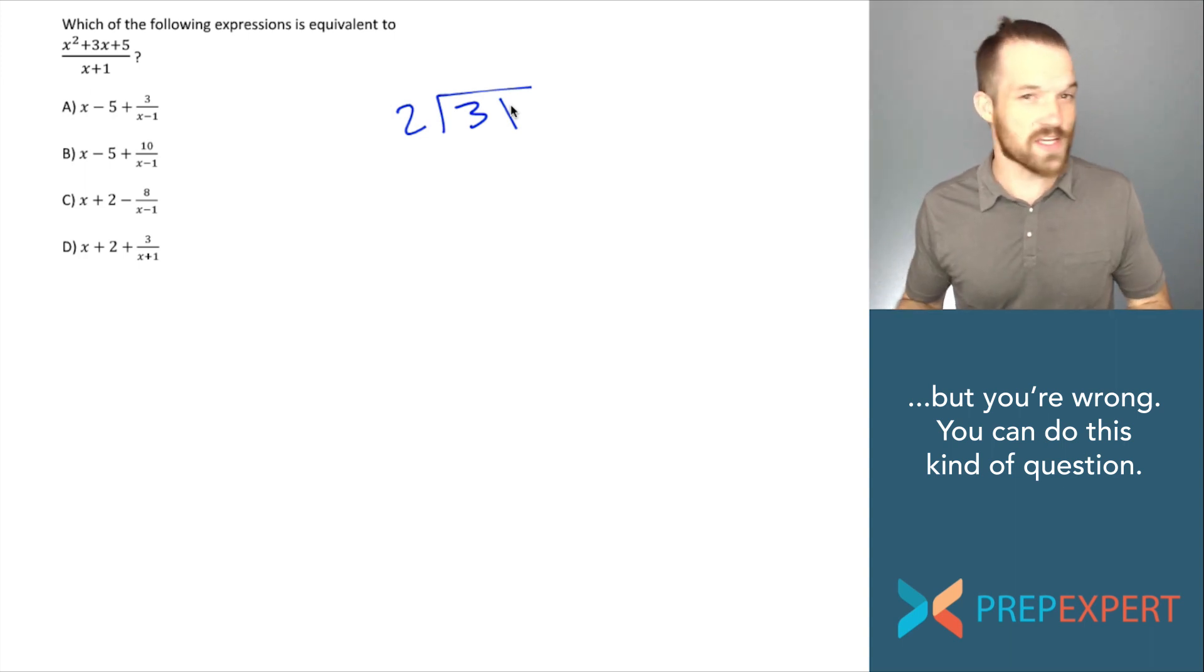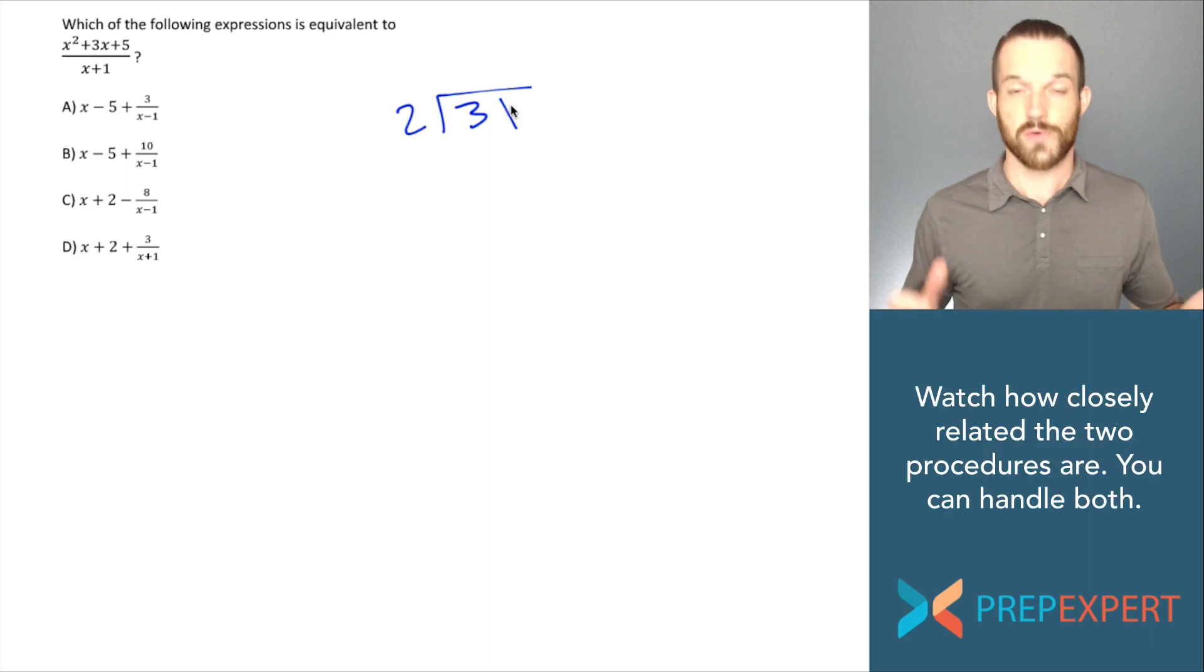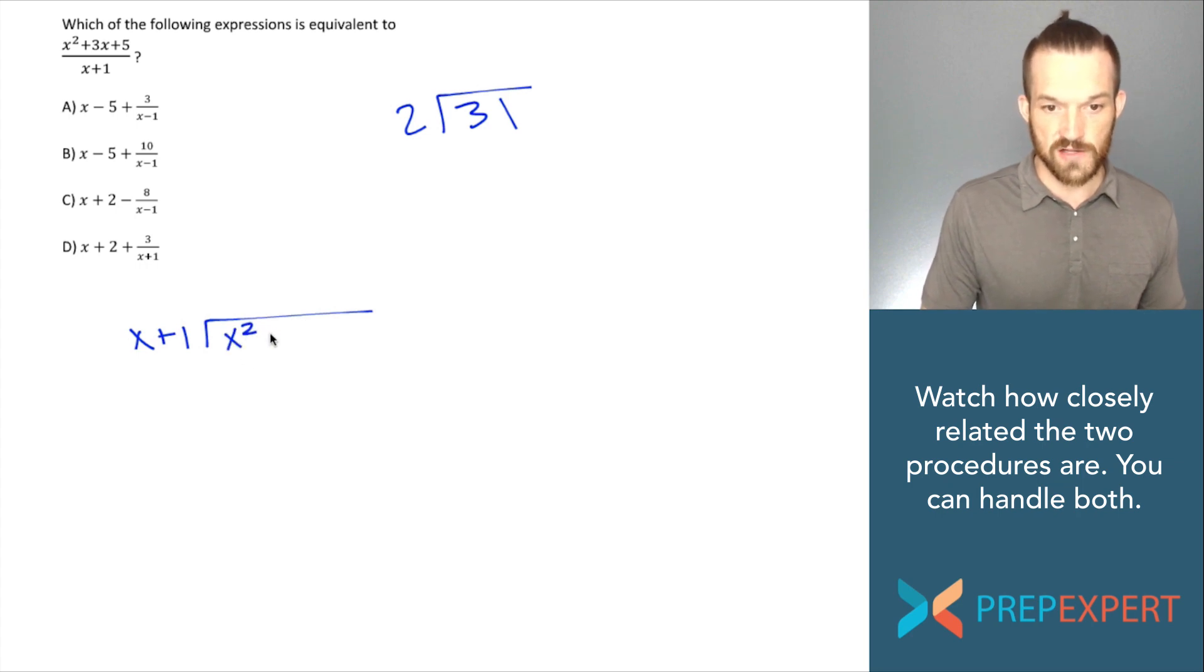But if you can divide 2 into 31, then you can solve this polynomial division question using polynomial long division. I'm going to walk you through the process and show you how similar it is to the process that you learned in like 4th or 5th grade for dividing 2 into 31. Note, I don't mean can you tell me what the answer is of 2 divided into 31. What I mean is can you execute the division procedure that you learned a long time ago to find the answer for 2 divided into 31. I think you probably can.